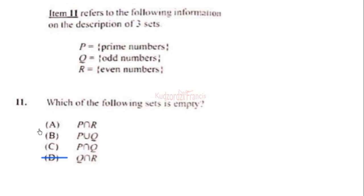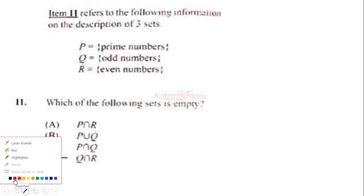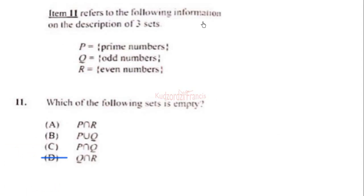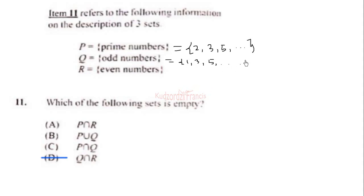Question 11 refers to a description of three sets: P is prime numbers and Q is odd numbers. The prime numbers are 2, 3, 5, and so on. The odd numbers start from 1, then 3, 5, and so on. We also have the even numbers which start from 0 or 2, so 2, 4, 6, and so on. This is enough information to answer the question.